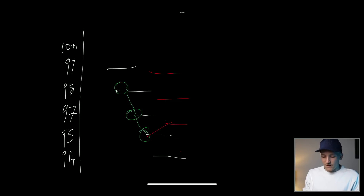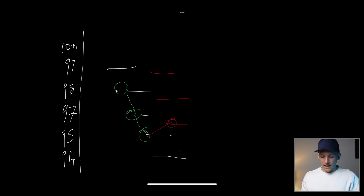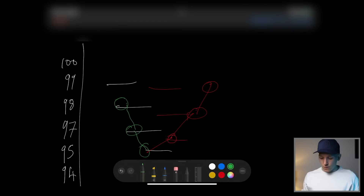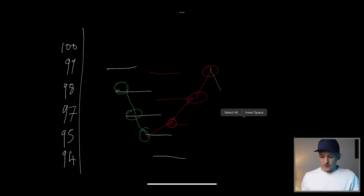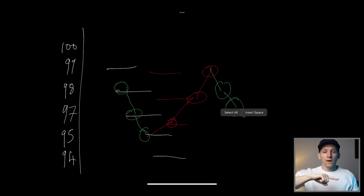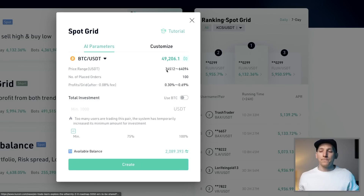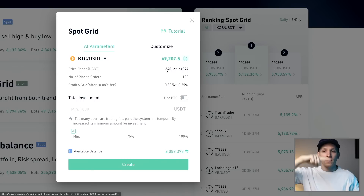As the price moves back up the bot sells — and when it comes down again it refreshes all the buy orders, buying more at each level. It continually places buy and sell orders at different levels, taking advantage of volatility. The bot just goes buy, sell, buy, sell the whole time when there's volatility moving up and down — something you simply can't do as an individual trader.